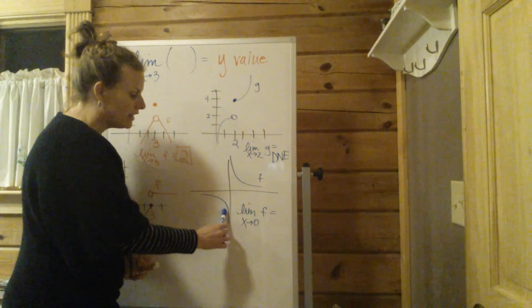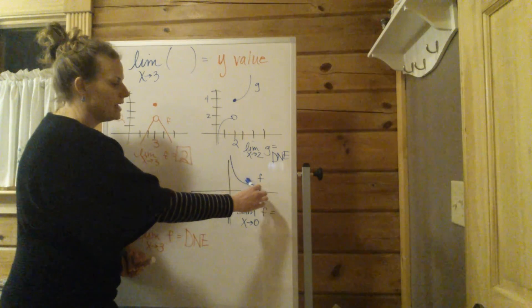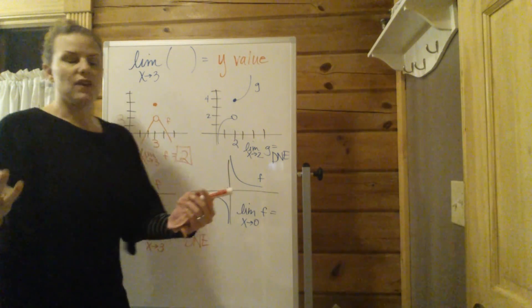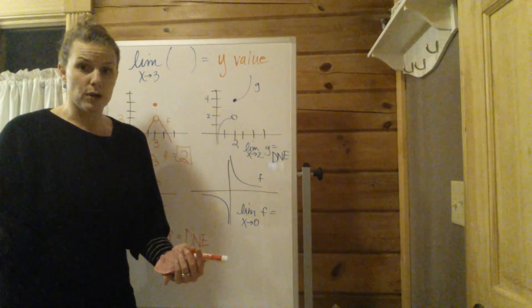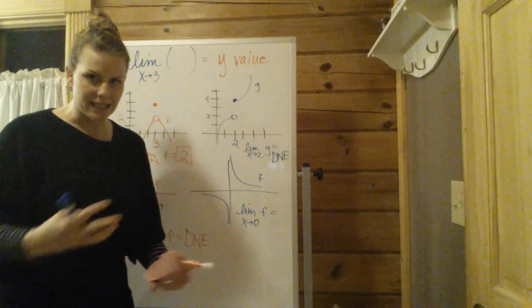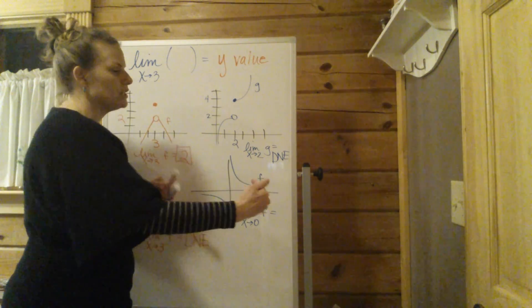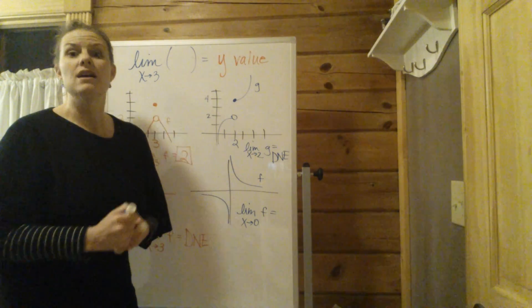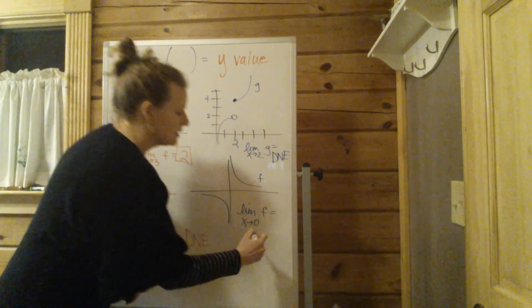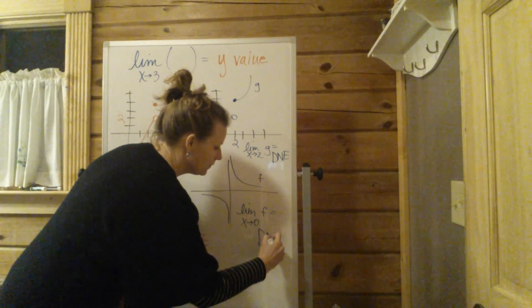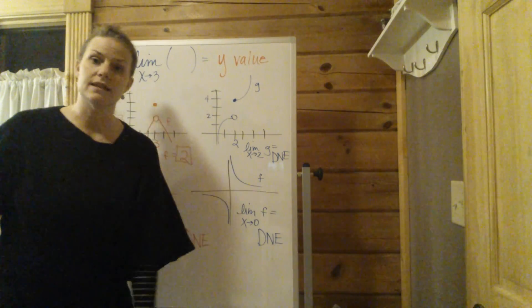So here, the y values are going to negative infinity. From the right, they're going to positive infinity. First of all, they're not approaching numbers at all. They're approaching infinity, which is not a single number. Also, they're approaching two different things from the separate sides. So for those two reasons, this limit would also not exist.